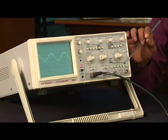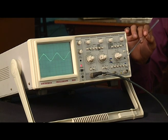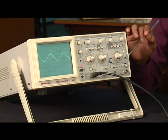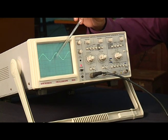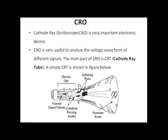Next is the cathode ray oscilloscope, CRO. The CRO is a very important electronic device, useful for analyzing the voltage waveform of different signals. The main part of the CRO is the cathode ray tube. It consists of a heating filament, an electron gun, horizontal and vertical deflection plates, and a fluorescent screen. When charged electrons are emitted by heating the filament, the emitted electrons are accelerated towards the screen. The frequency and amplitude of the signal displayed on the fluorescent screen depend on the voltage supplied to the deflection plates.